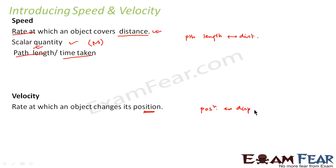Just keep these key points in your mind. Now velocity is a vector quantity. That means it has both magnitude and direction. It is displacement by time taken.